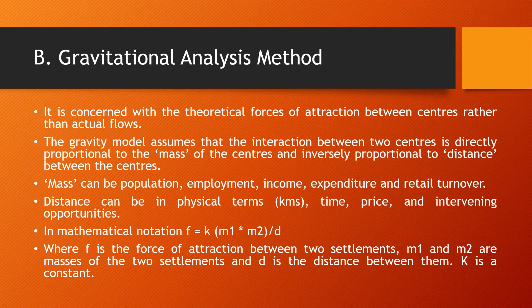The gravity model assumes that the interaction between two centers is directly proportional to the mass of the centers and inversely proportional to the distance between them. Mass can be represented by population, employment, income, or expenditure.